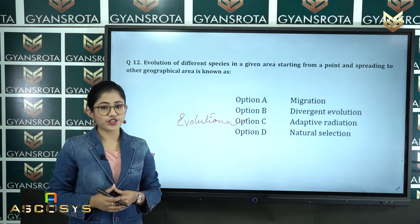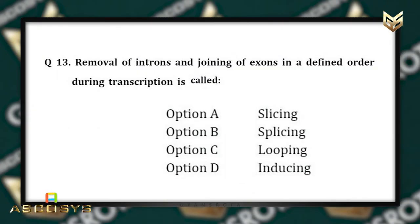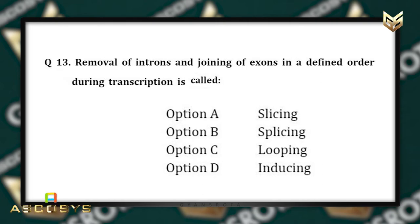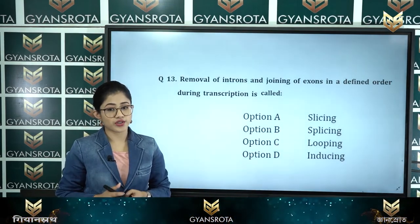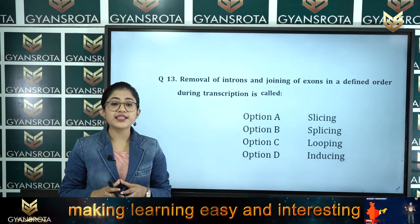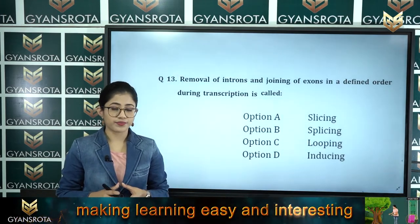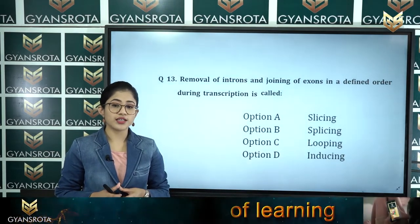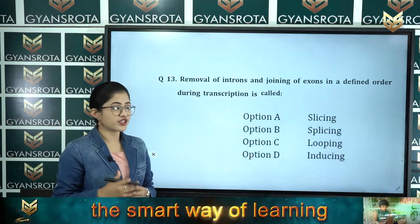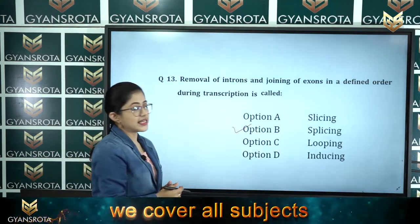Question number 13: Removal of introns and joining of exons in a defined order during transcription is called — option A slicing, option B splicing, option C looping, option D inducing. We have discussed this in the chapter Molecular Basis of Inheritance. The process is called splicing, so option B is the correct answer.